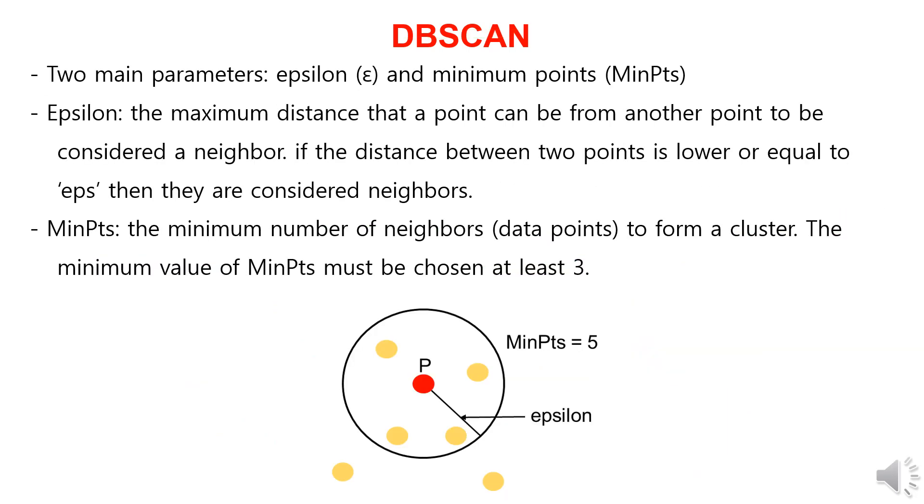When executing DBSCAN, there are two important parameters: epsilon and minimum points. Epsilon represents the maximum distance that a point can be from another point to be considered a neighbor, and if the distance between two data points is less than or equal to epsilon, they are considered neighbors.